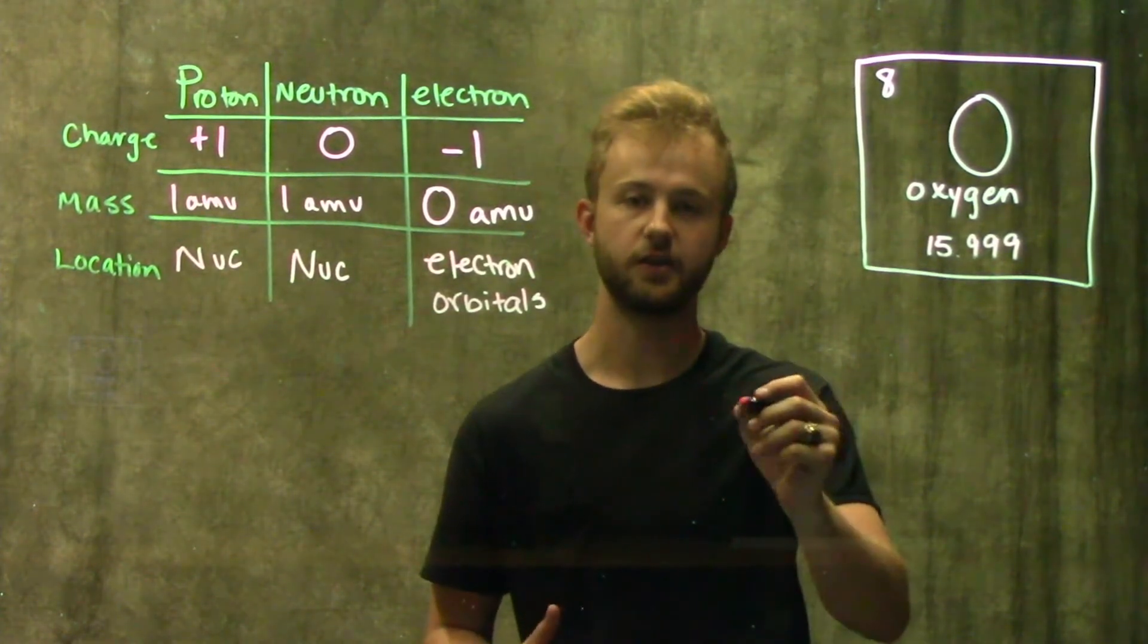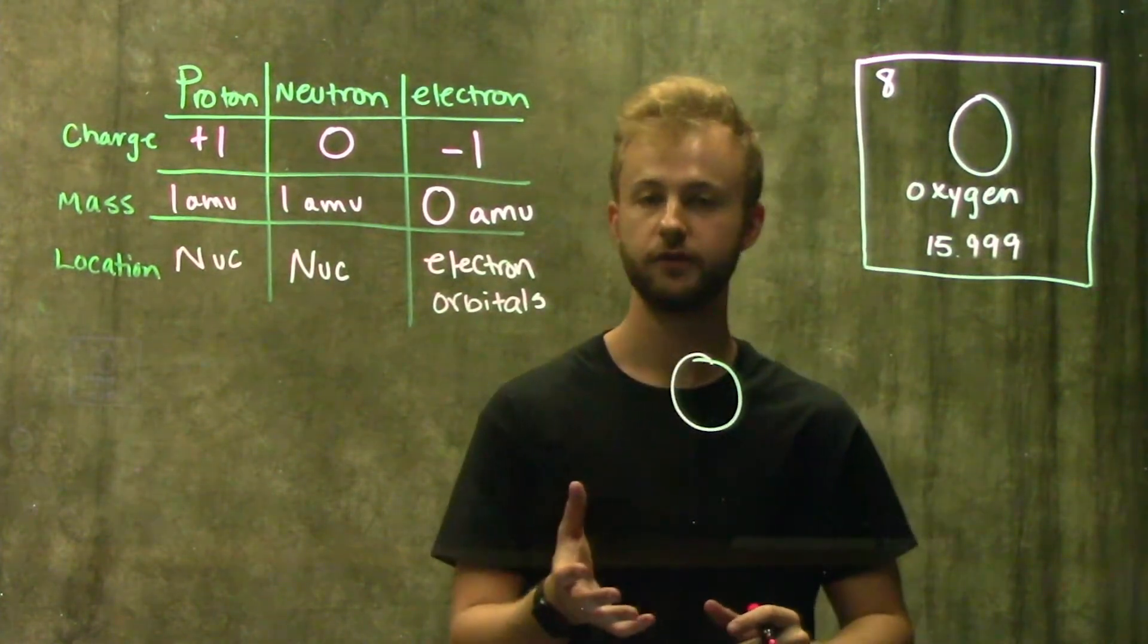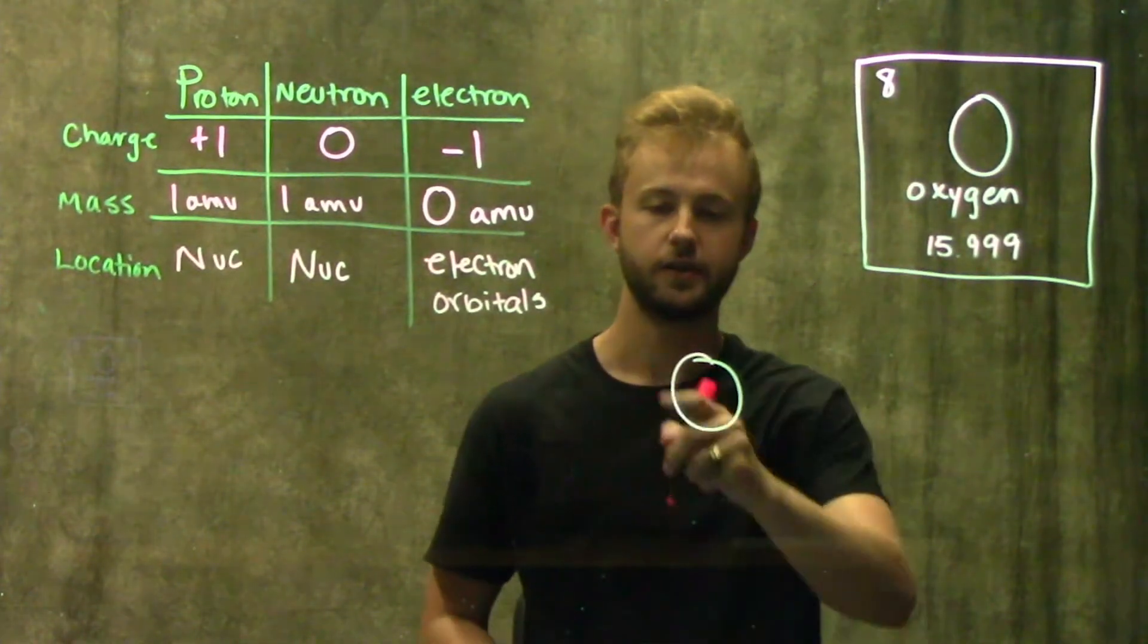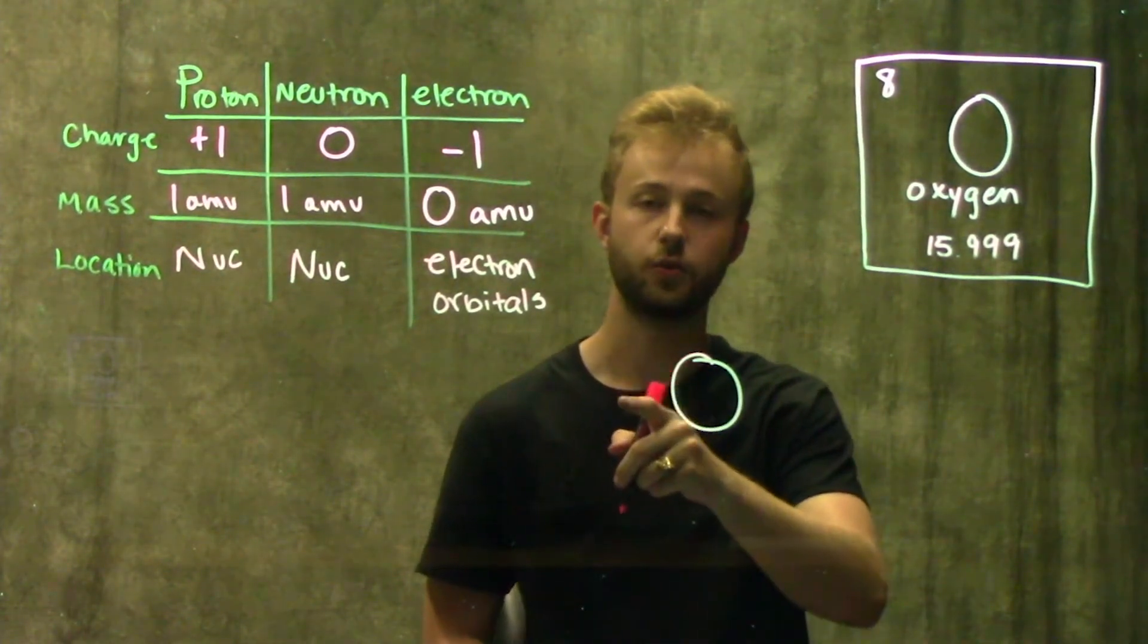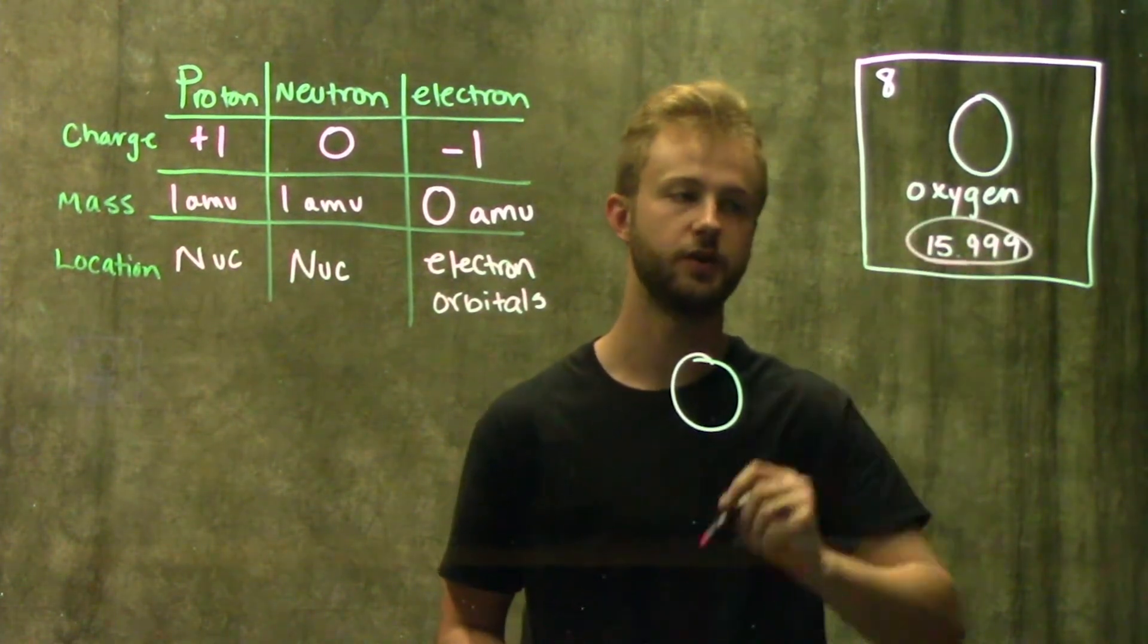So some common ways that you might see oxygen represented is you'll always have the symbol of the element. We get that right from the middle of the box on the periodic table. And then up here in this top left-hand corner, we're going to have the atomic mass, which we get from right here on the periodic table.